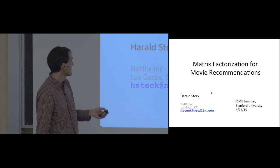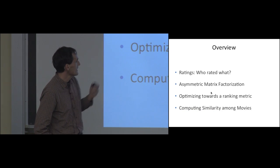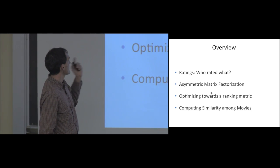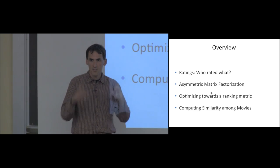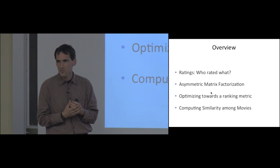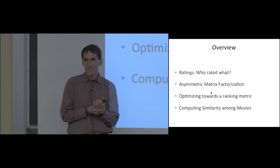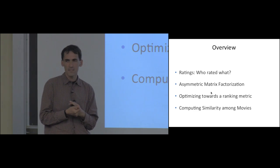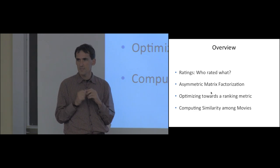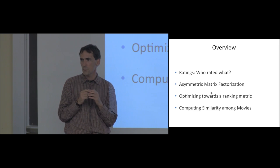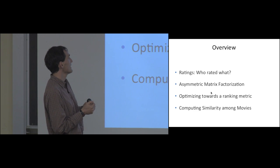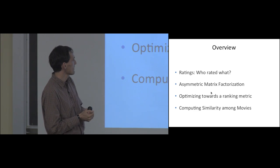I want to talk about four different topics, all motivated by practical issues. The first one is about rating data — a matrix concerning users and items with the ratings users gave. Typically people only think about using the rating values, but there's actually a lot of information in the fact of who rated what, i.e., which entries in the matrix are actually observed. That actually contains almost more information than the rating values themselves.